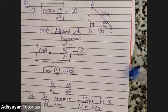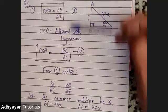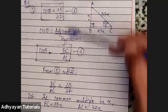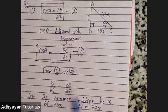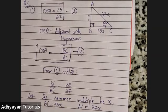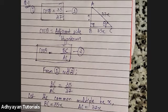I want you all to copy this much — the figure as well. Copy it all and then apply Pythagoras theorem and tell me what is the value of AB. Be very quick and complete Pythagoras theorem as well.